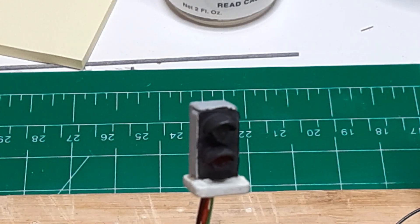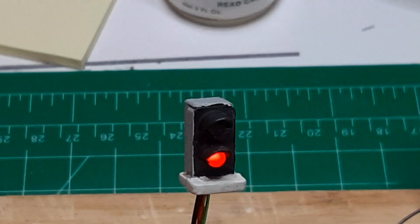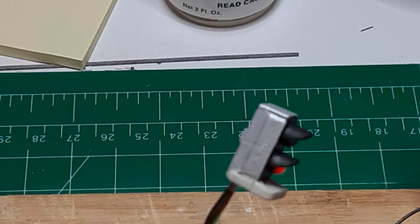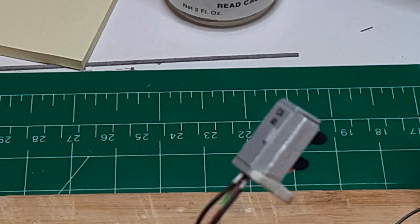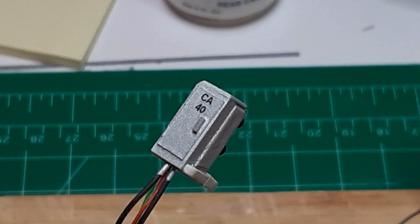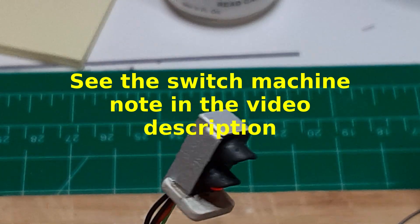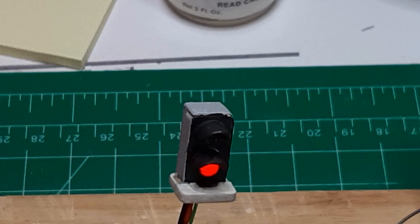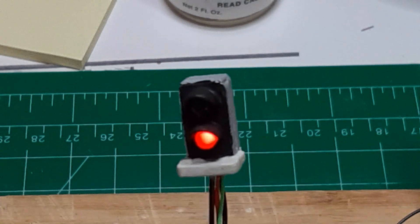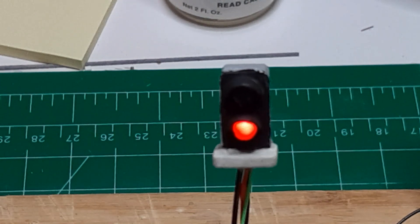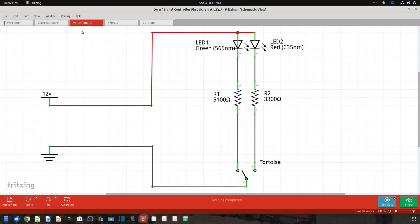Now that our dwarf signals have been built, it's time to create the circuitry to control the signals. This control circuit will use one set of auxiliary contacts provided by most switch machines. When the turnout is in the straight position, one LED is illuminated, and when the turnout is in the diverging position, the other LED is illuminated.